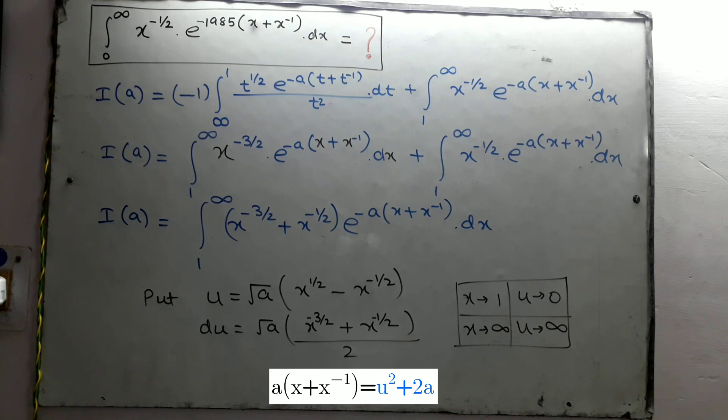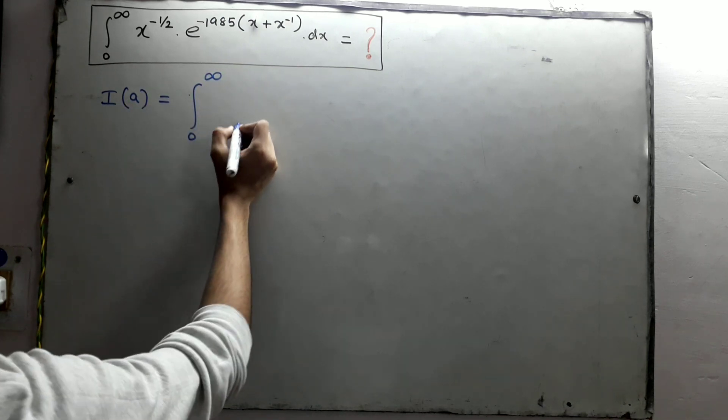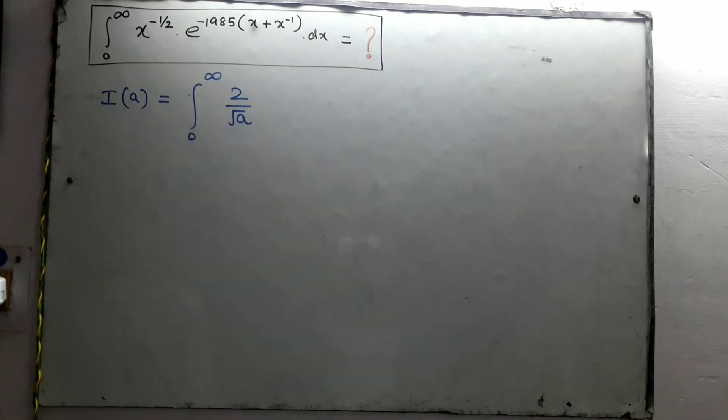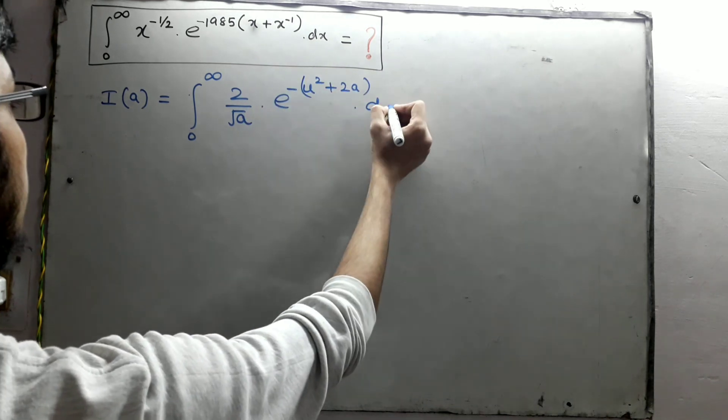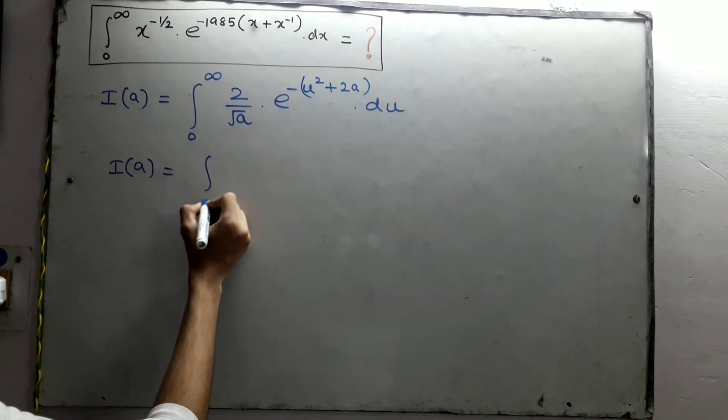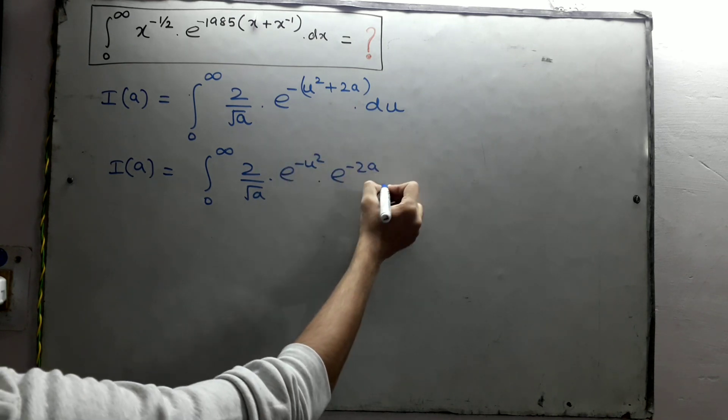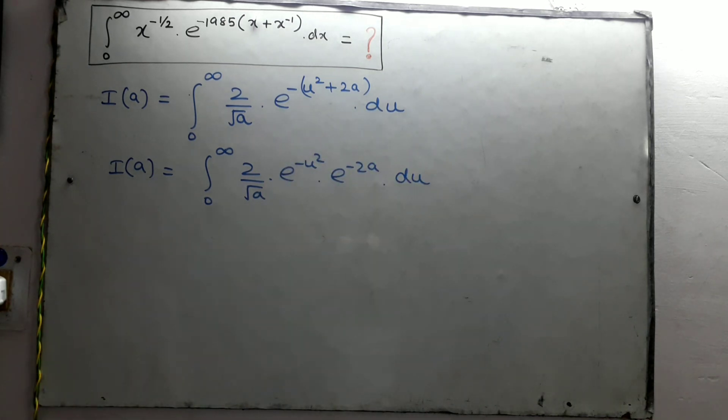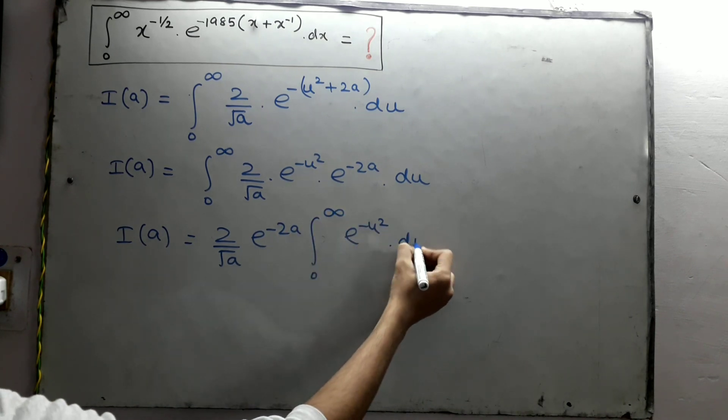And limit from 0 to infinity. Now replacing all this, we get the transformed integral. Taking all the constant outside from the integral.